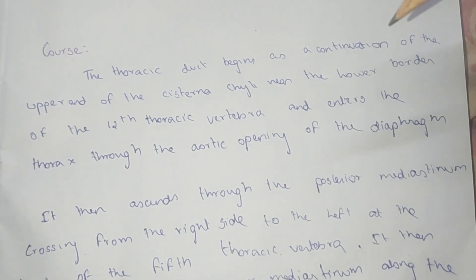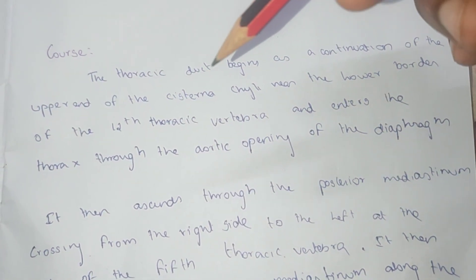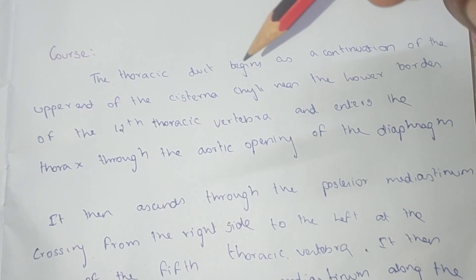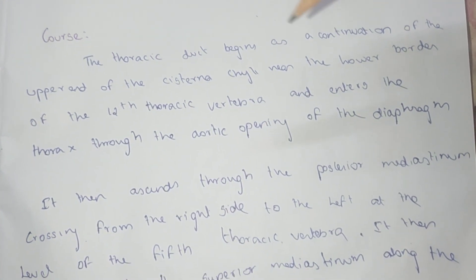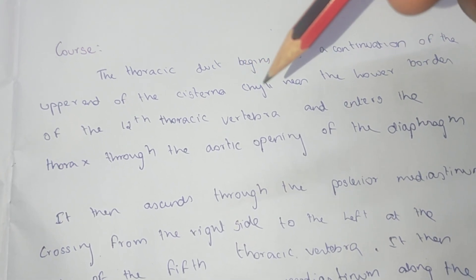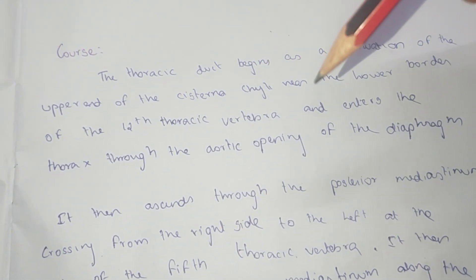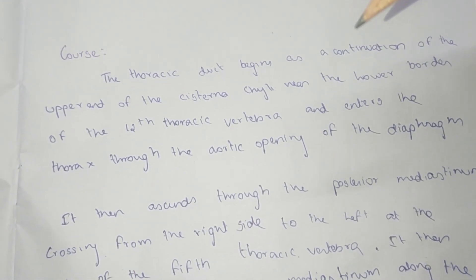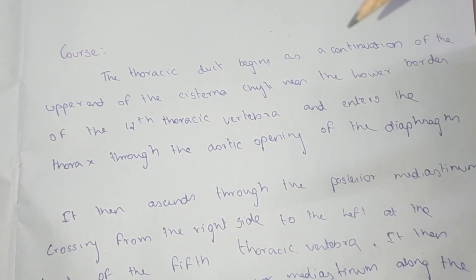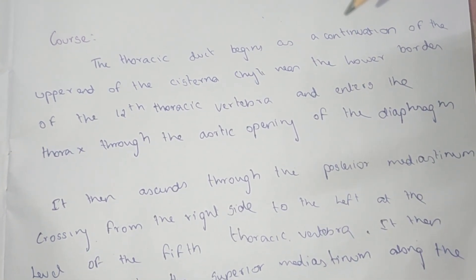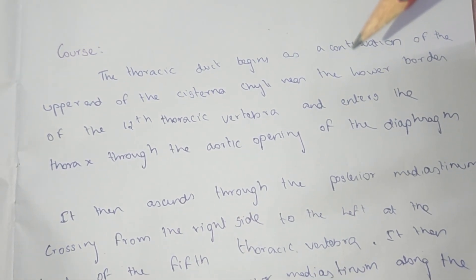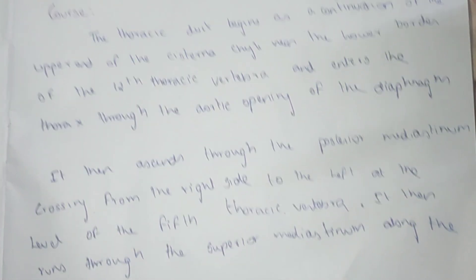The thoracic duct begins at the continuation of the upper end of the cisterna, near the lower border of the 12th thoracic vertebra. It enters the thorax through the aortic opening of the diaphragm.